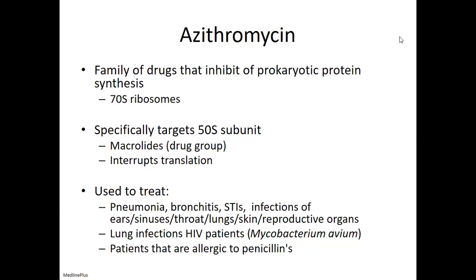This is a good target because we don't have a 70S ribosome — except in our mitochondria. It's a nice general target. Compared to beta-lactam antibiotics, it can sometimes be harder to get a beta-lactam antibiotic to be effective against gram-negative bacteria — the easiest target for beta-lactams interfering with cell wall synthesis is gram-positive bacteria, which have a much bigger cell wall.